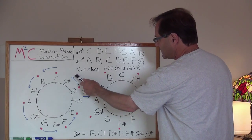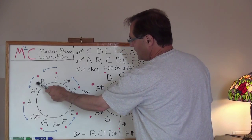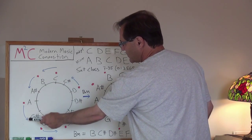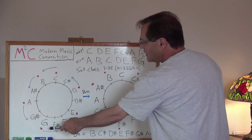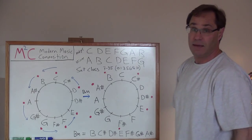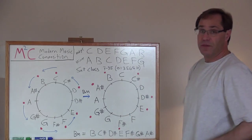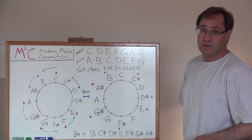So, this note gets rotated to C sharp. C gets rotated to B. B gets rotated to A sharp. A gets rotated to G sharp. G gets rotated to F sharp. And F gets rotated to E. When we do that, we end up with this representation.